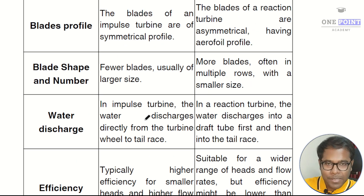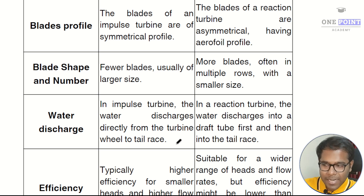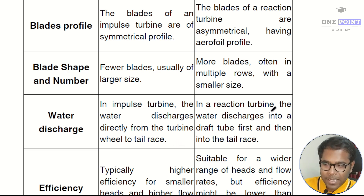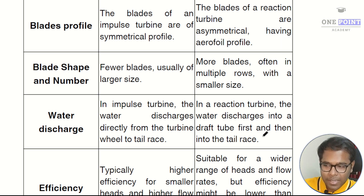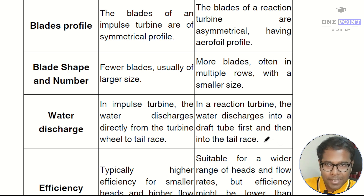The next difference is based on water discharge. In an impulse turbine the water discharges directly from the turbine wheel to the tail race, whereas in a reaction turbine the water discharges into a draft tube first and then is sent into the tail race.